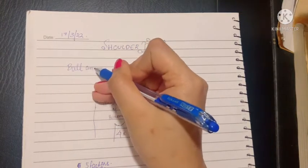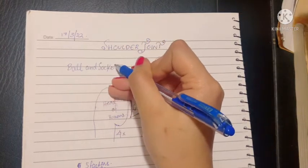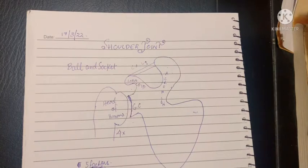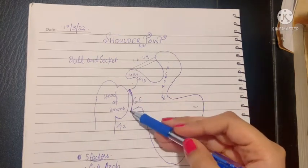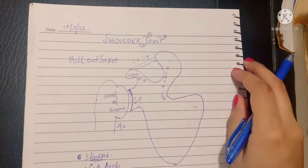The shoulder joint is a type of ball and socket joint of the synovial variety. Ball and socket because the head of the humerus is the ball and the socket is provided by the glenoid cavity of the scapula.